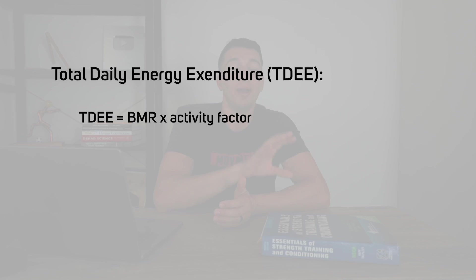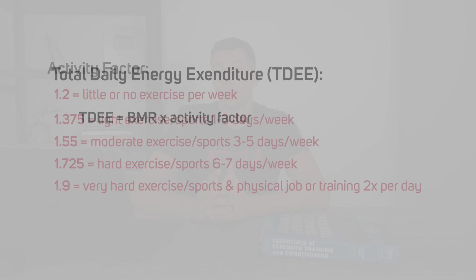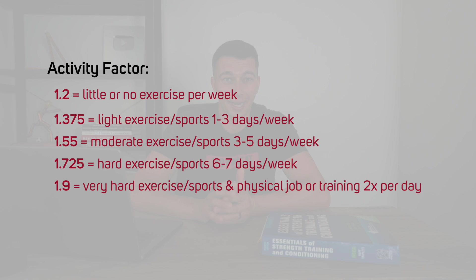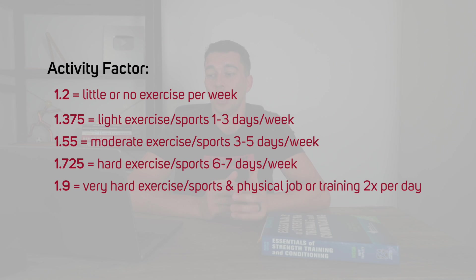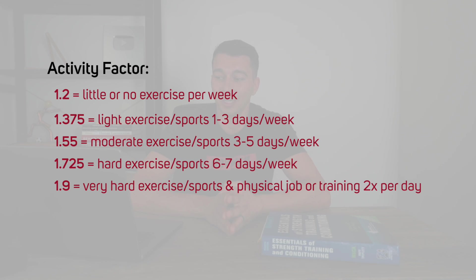Now we need to take basal metabolic rate and turn it into total daily energy expenditure to know how many calories this athlete is actually burning in a day. To get that TDEE estimate, multiply the BMR by an activity factor ranging from 1.2 to 1.9: 1.2 for little to no exercise, 1.375 for light exercise one to three days per week, 1.55 for moderate exercise three to five days per week, 1.725 for hard training six to seven days per week, and 1.9 for very hard exercise plus a physically demanding job or training twice per day.